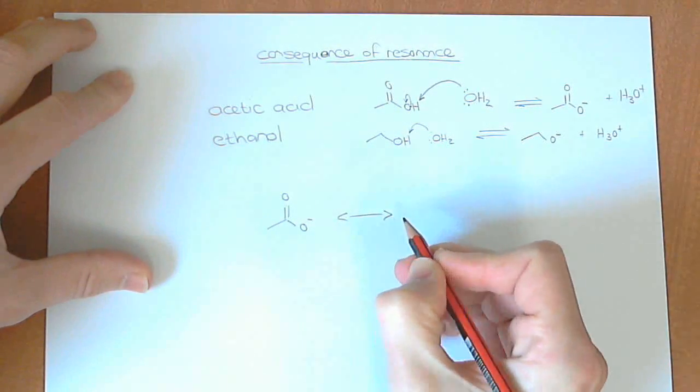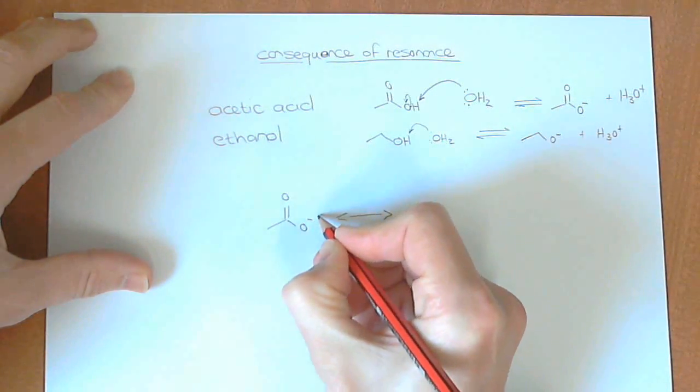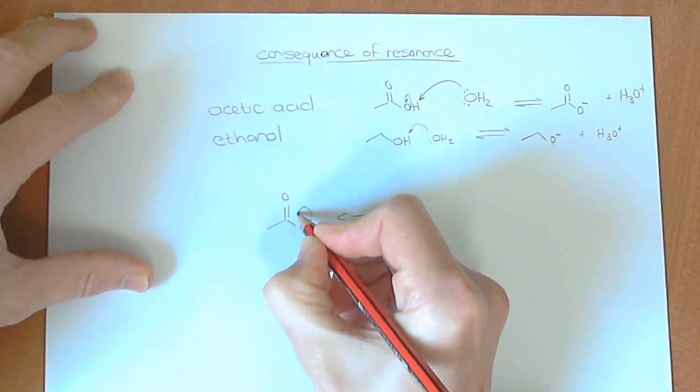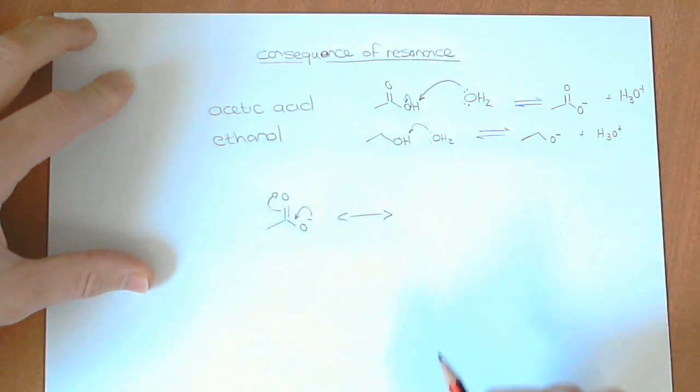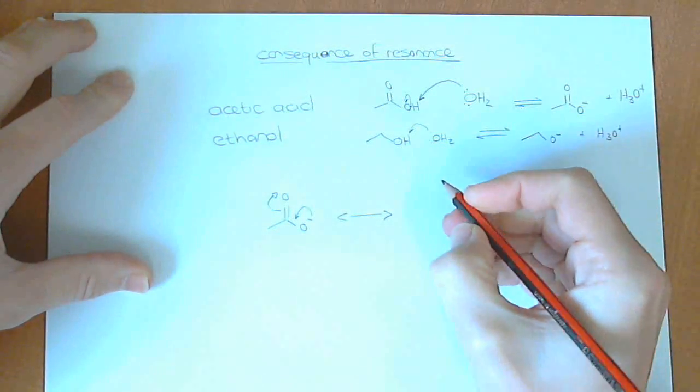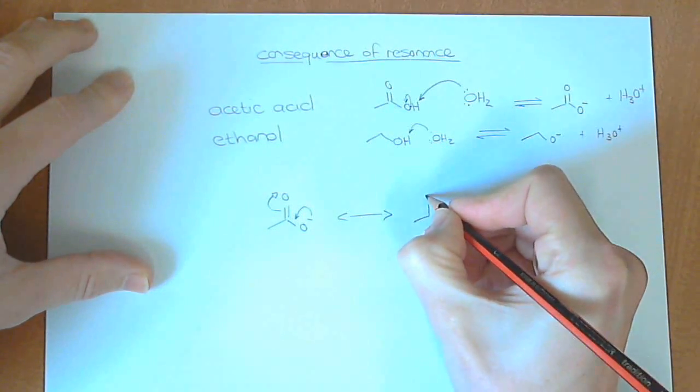And if we draw out the resonance, this lone pair of electrons, which is in the negative charge here, can go in, and that pi bond can then break and give the negative charge on the oxygen up there.